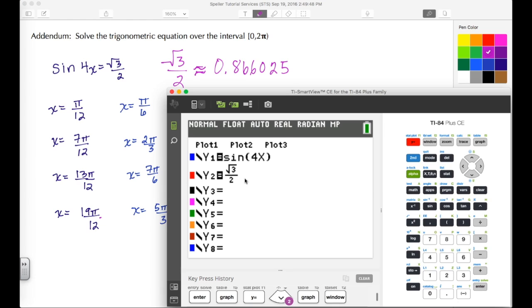Let's open the calculator. Here in the calculator you see I already have the two expressions assigned: sin(4x) and √3/2, where sine is in blue and √3/2 is in red. Let's take a look at the window.